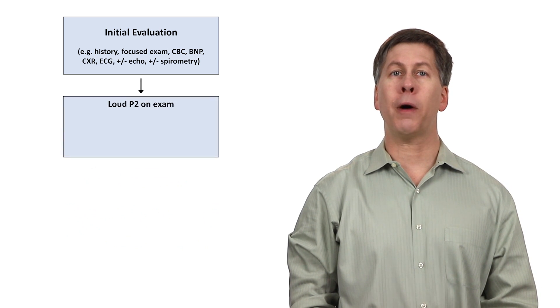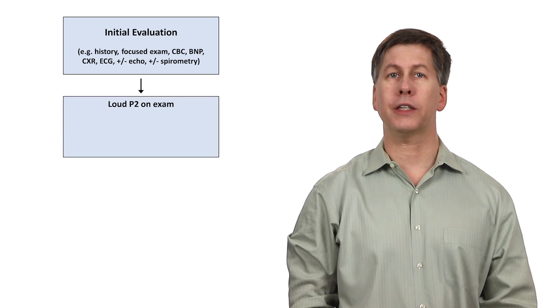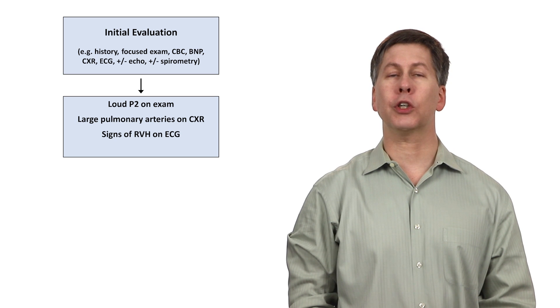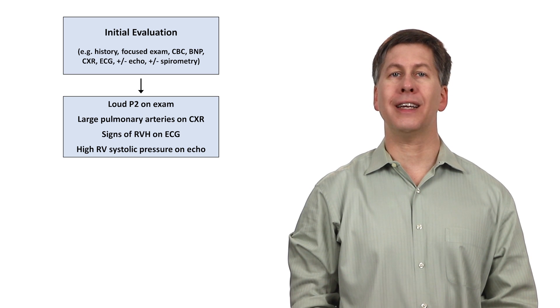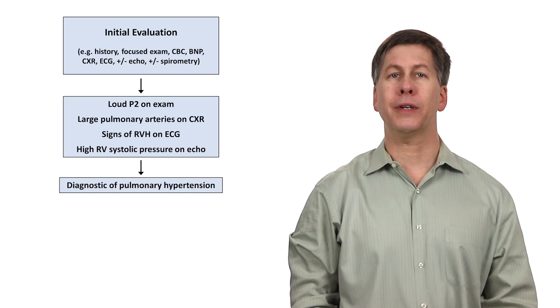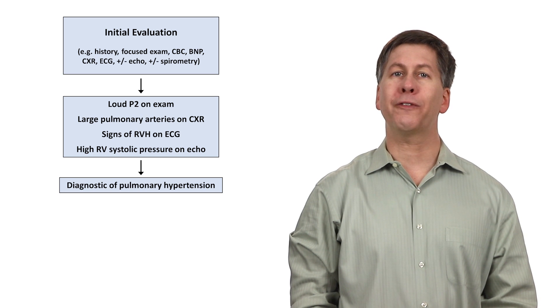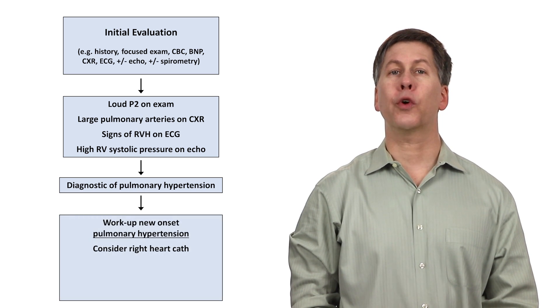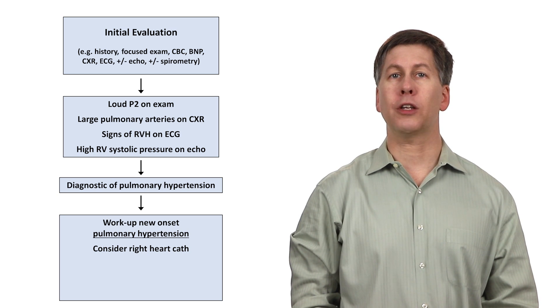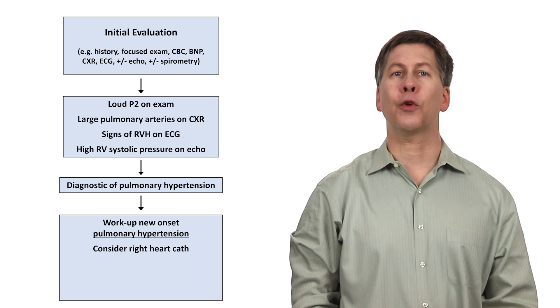If the patient has a loud pulmonic component of the second heart sound on exam, large pulmonary arteries on chest x-ray, and high right ventricular systolic pressures on echo, that last finding is more or less diagnostic of pulmonary hypertension. Some doctors prefer to confirm the presence of pulmonary hypertension with a right heart cath during which the pulmonary artery pressures can be directly measured, but this is not universally done.